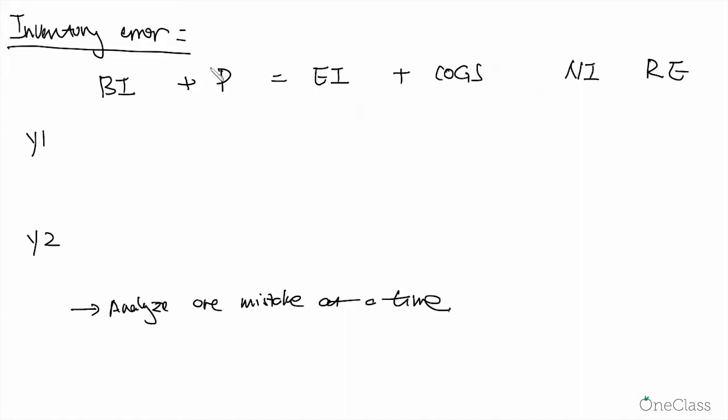And because we have the inventory error, error is going to hit our net income because the cost of goods sold flow to the net income. And it's also going to impact our retained earnings because our net income will be part of the calculation in our retained earnings.